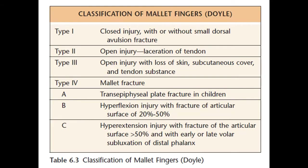Doyle has classified mallet finger injuries, and this is an excellent classification system as the type of injury actually determines the management. The strategies are different for the different types: type two is an open injury, type four involves mallet injuries with subluxation, and type three involves soft tissue loss.